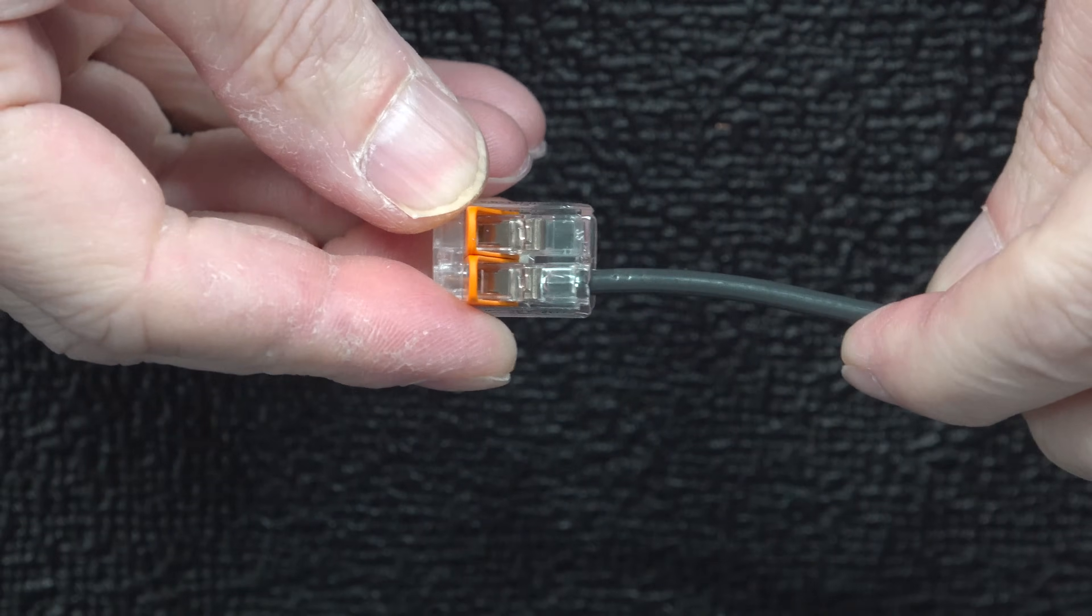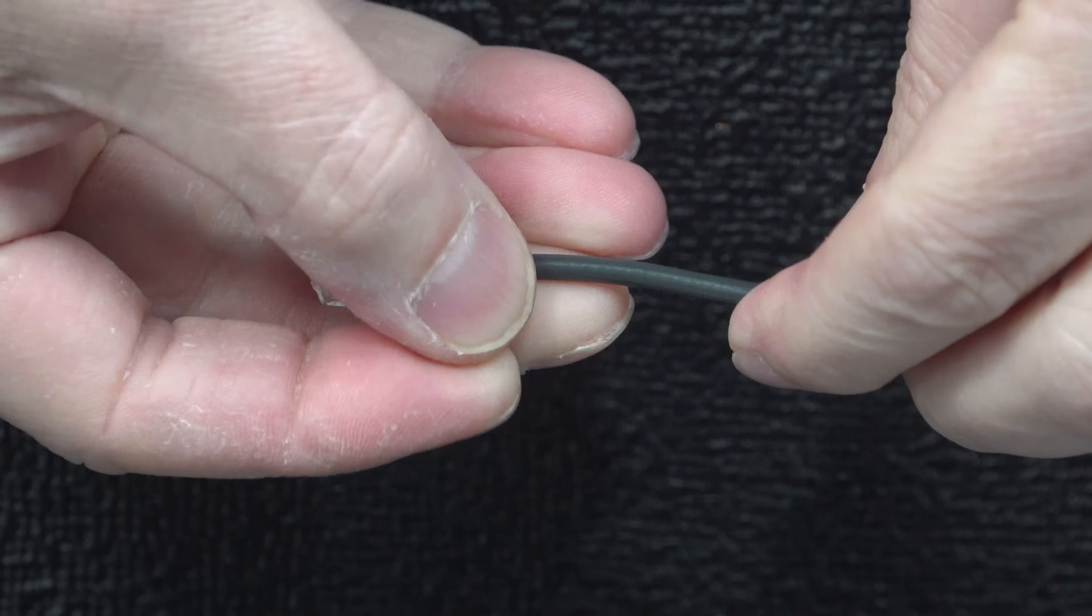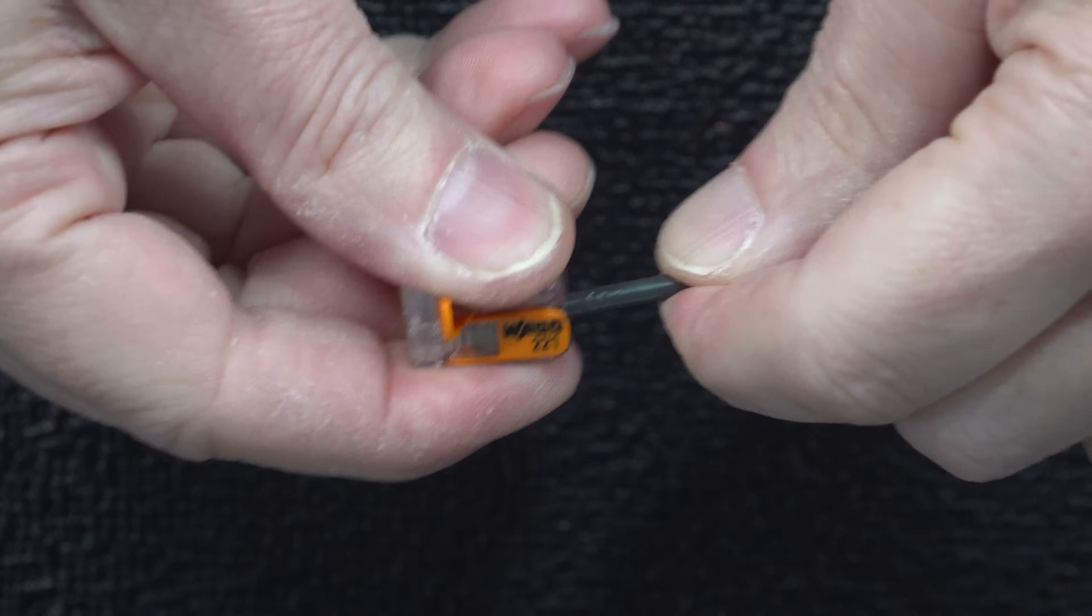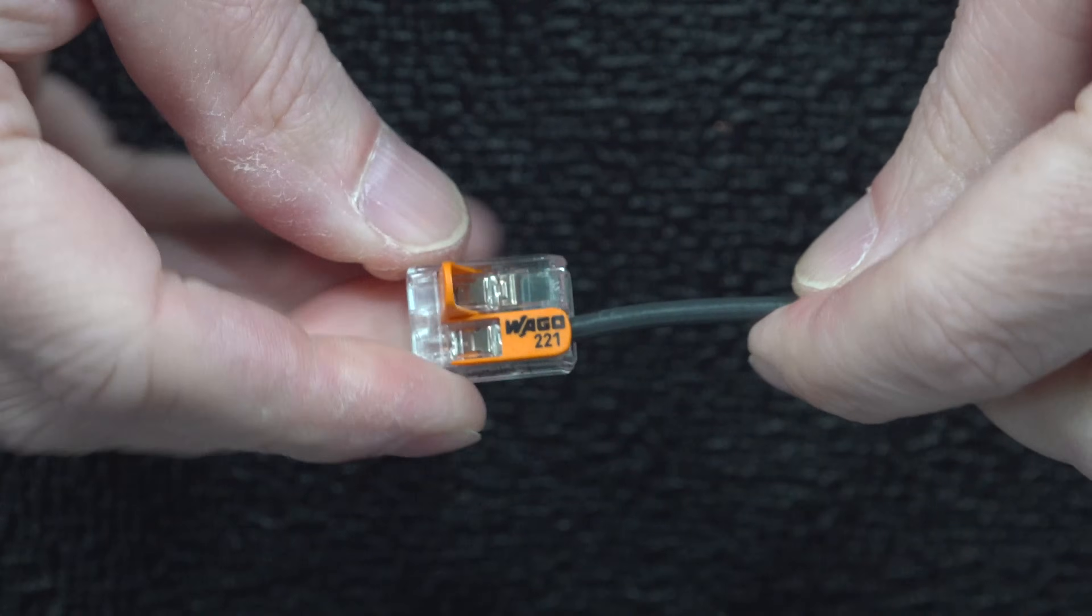And at the moment, the wire is still loose inside, but when you flip down that lever, you not only electrically connect the wire, it completely secures it, and now you can no longer pull it out.